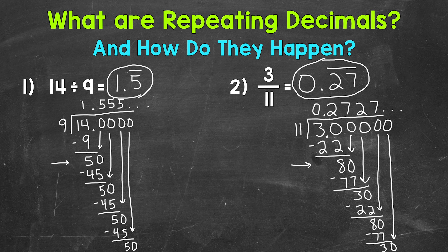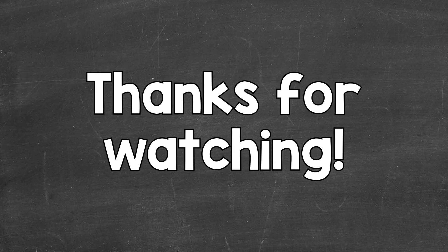So you can see that as we go through our long division process, we have a pattern that continues on forever, and that gives us our repeating decimals. Hopefully that gives you a better understanding of repeating decimals and how we get them. I hope that helped — thanks so much for watching.